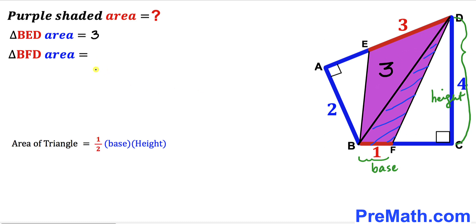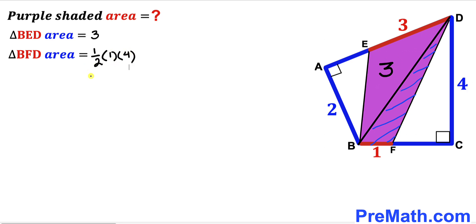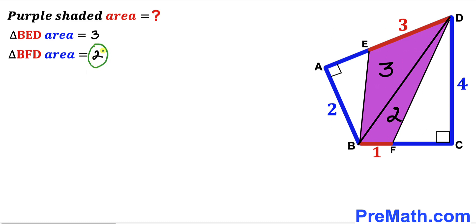So the area of triangle BFD is going to be one-half times base 1 times height 4. Simplifying, one-half times 1 times 4 gives us 2. So the area of triangle BFD turns out to be 2 square units.